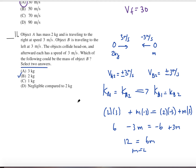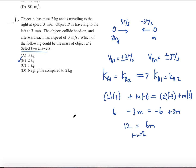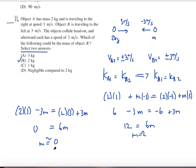Many people miss that this question asks to select two answers. The other case: if A maintains a positive velocity afterward, the equation becomes 2 times 3 minus 3M equals 2 times positive 3 plus 3M, giving 6 minus 6 equals 6M, so M approaches zero — an essentially negligible mass. This gives only B and D as valid choices.